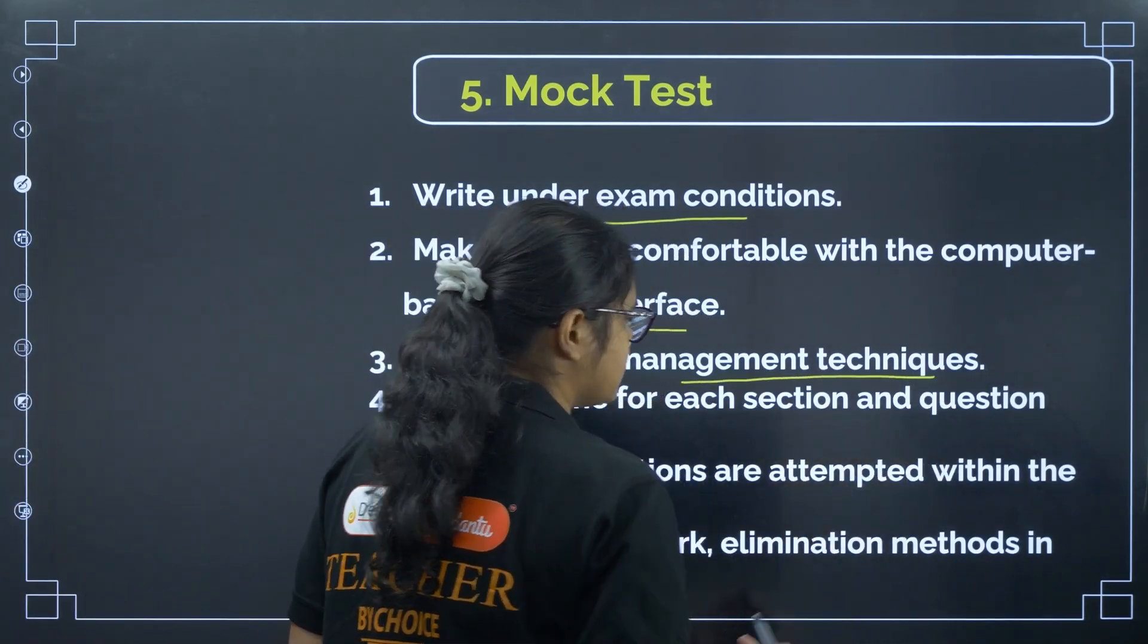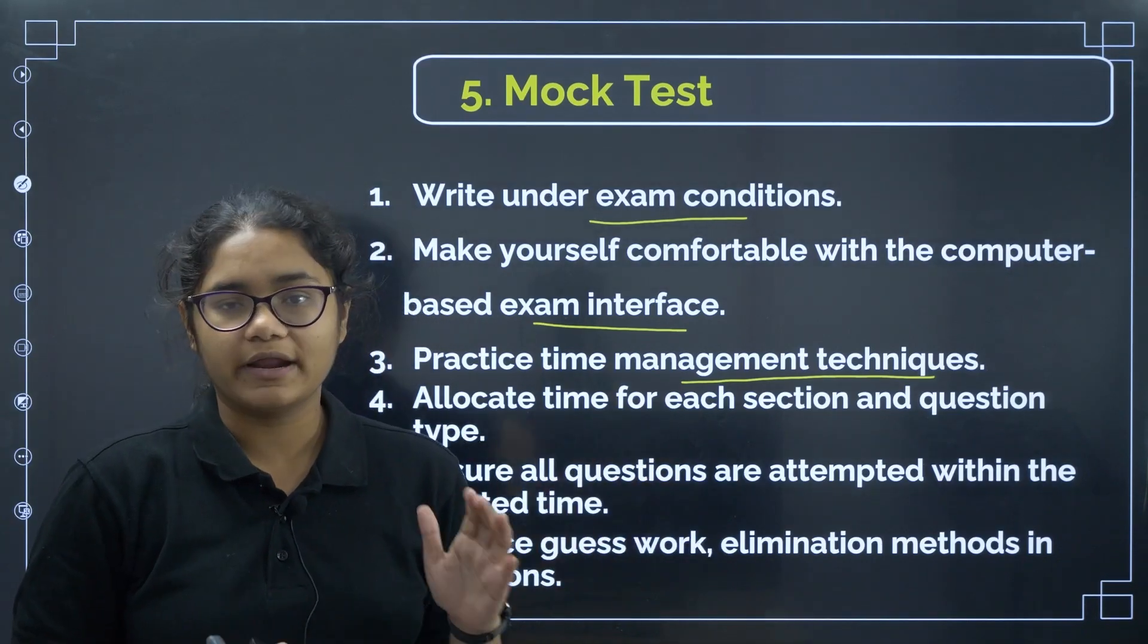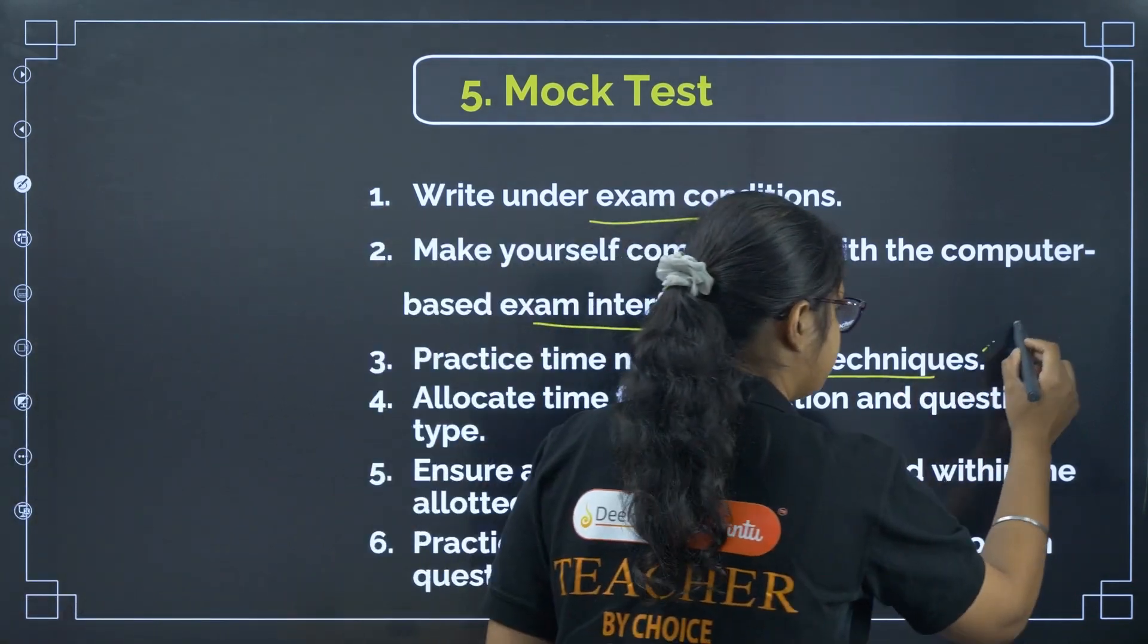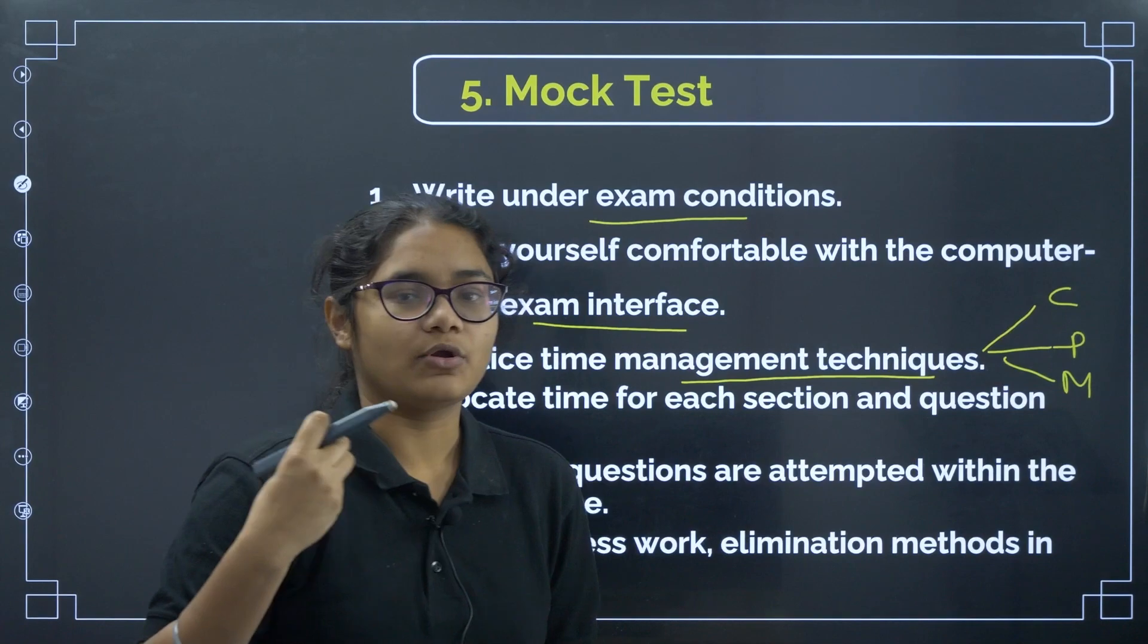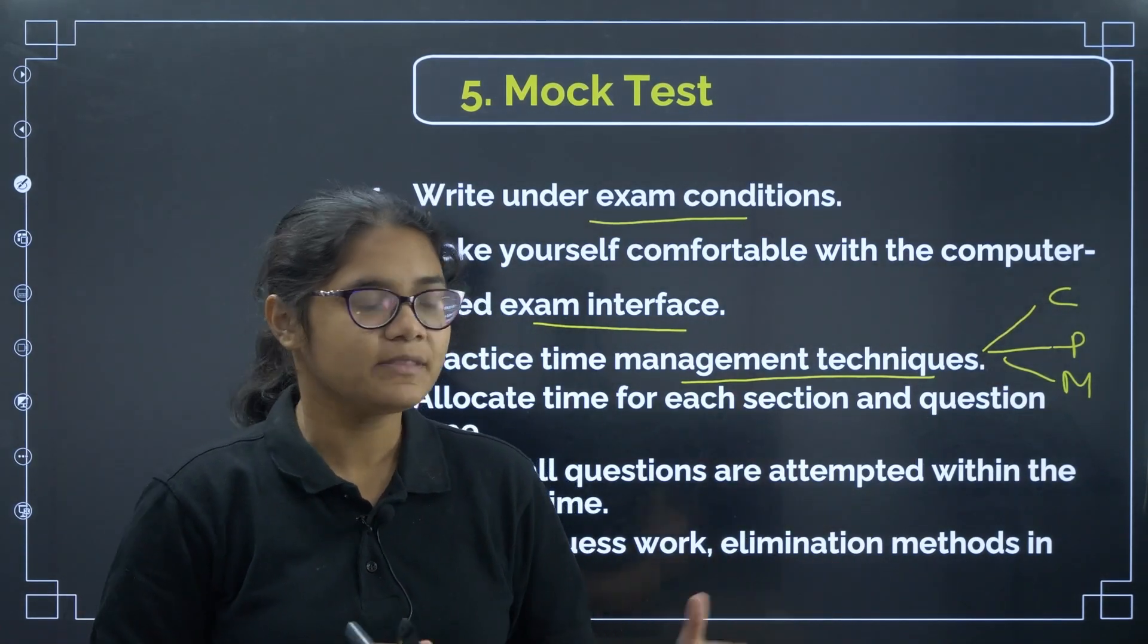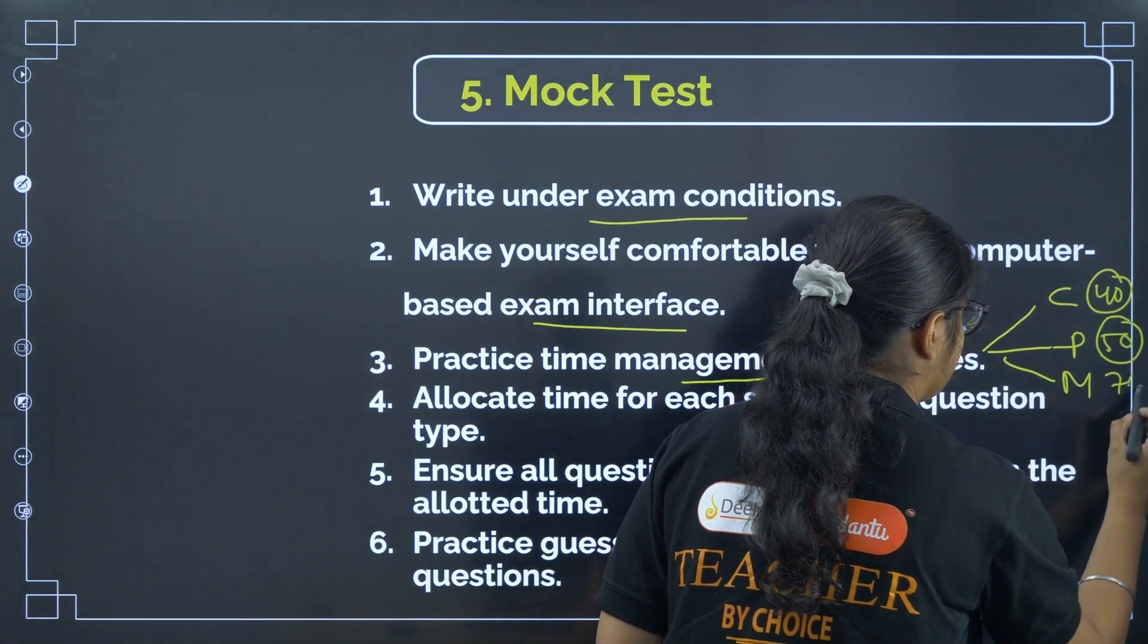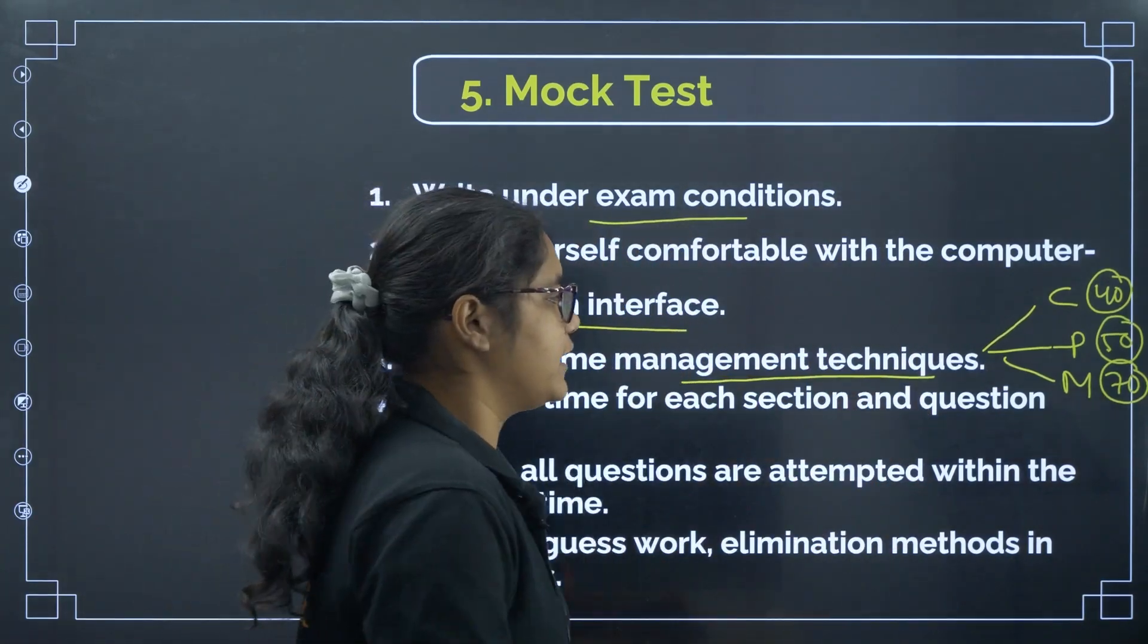Then whenever you write the mock test, write under the exam conditions to know whether you are able to complete all the 180 questions in three hours or not. Next, practice time management techniques. You have to allocate the proper time for all the three subjects. So according to my suggestion, please start with chemistry and then physics and then go for maths. Because maths takes a lot of time, the questions are not very easy, even the easy questions take a lot of time. So devote your time, like you can give 40 minutes to chemistry, 50 minutes to physics and rest 70 minutes to maths.